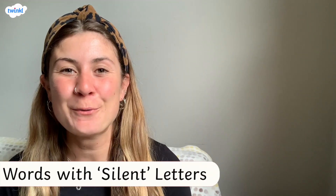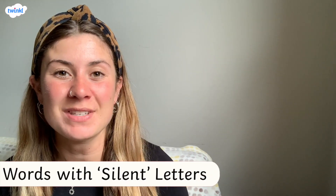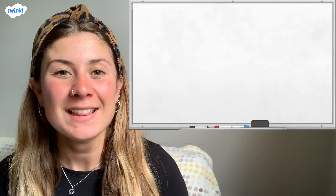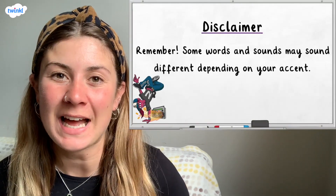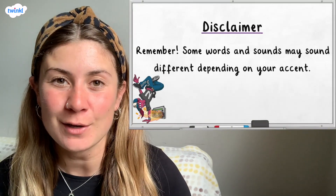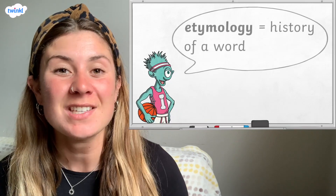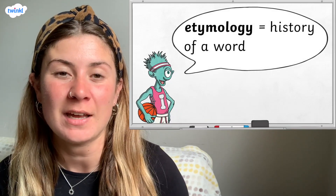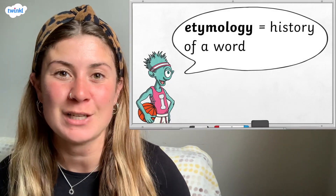In this video, we're going to be looking at words that have silent letters in them. This means when a word is read aloud, one letter is not used to make a sound. To help us understand why some words contain silent letters, it's helpful to look at etymology, which is the history of these words.